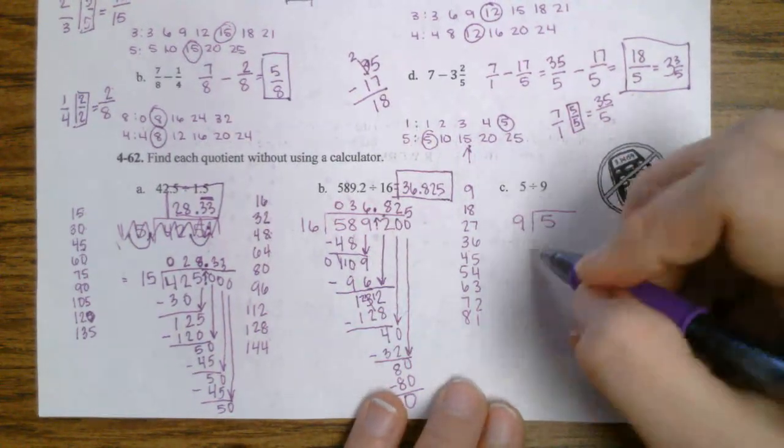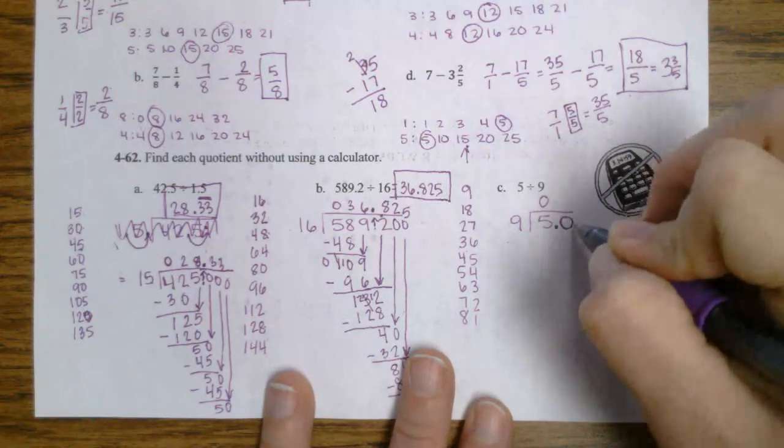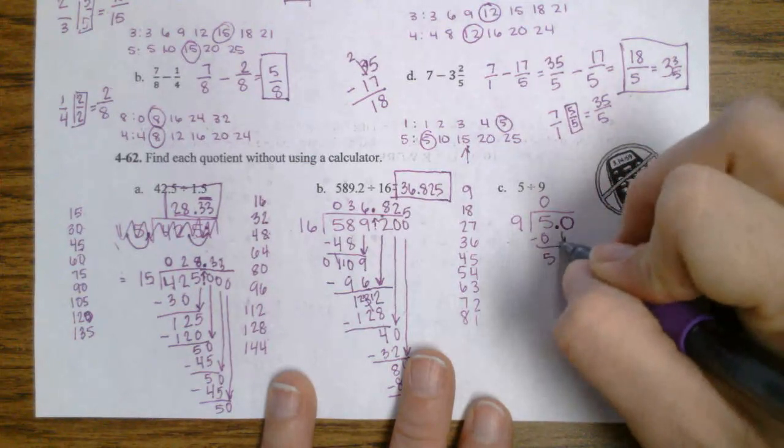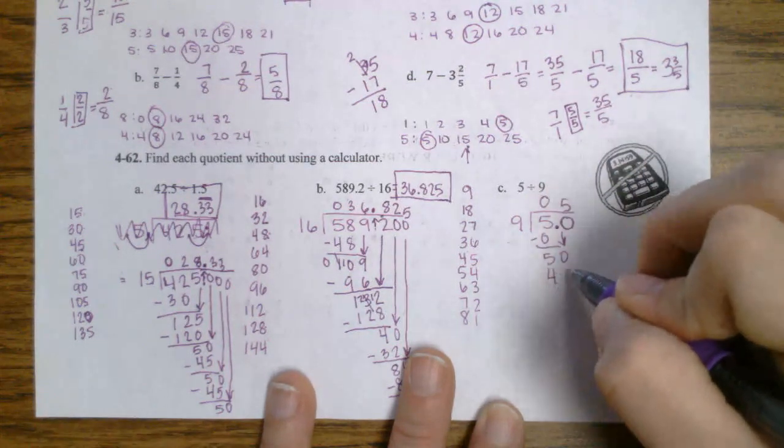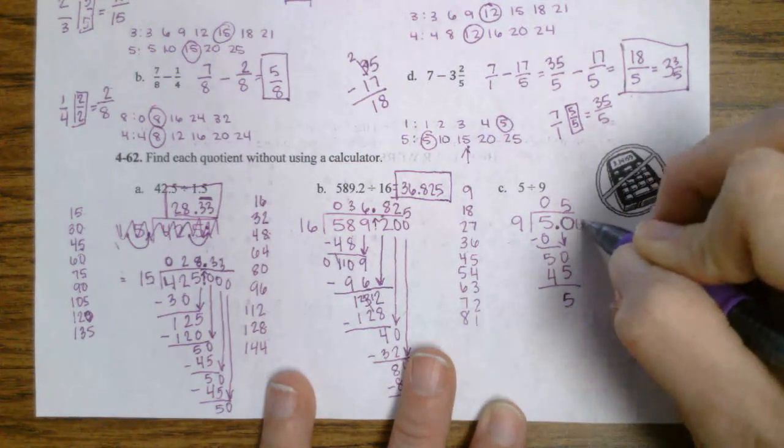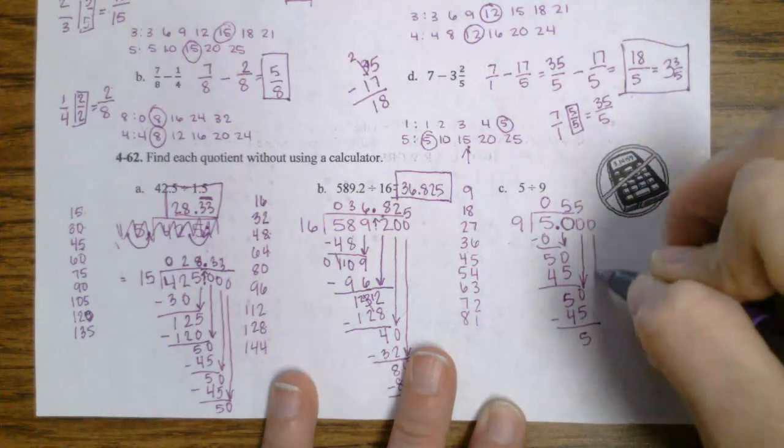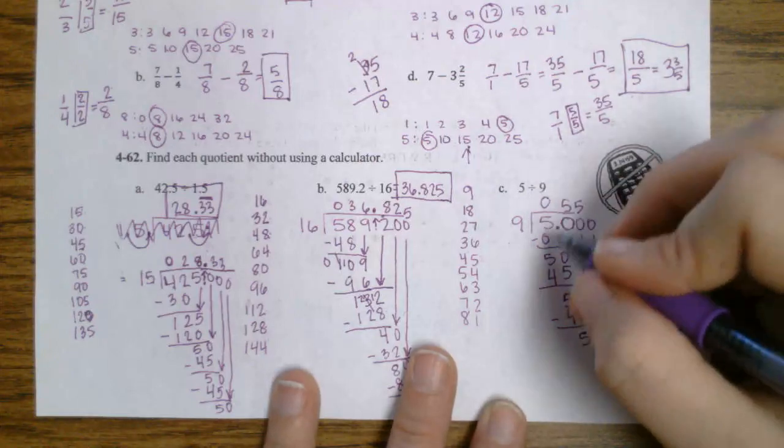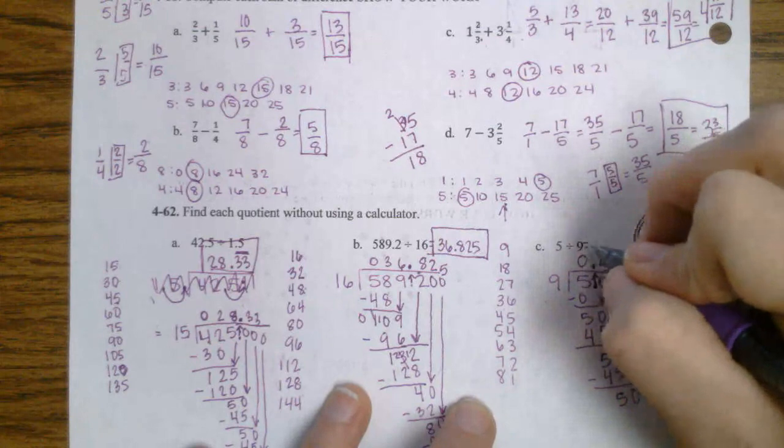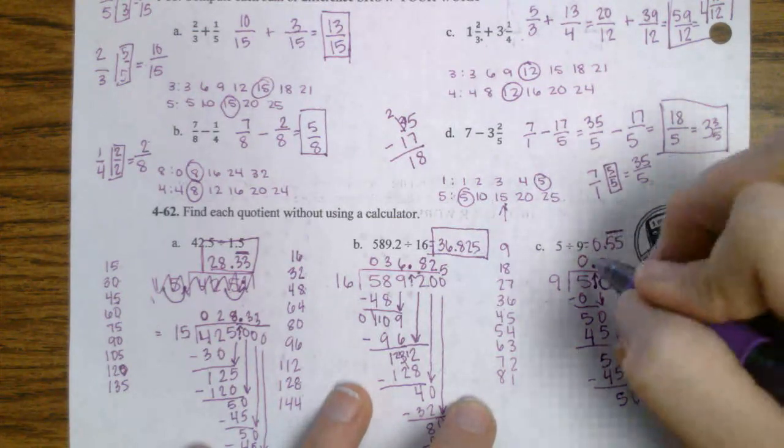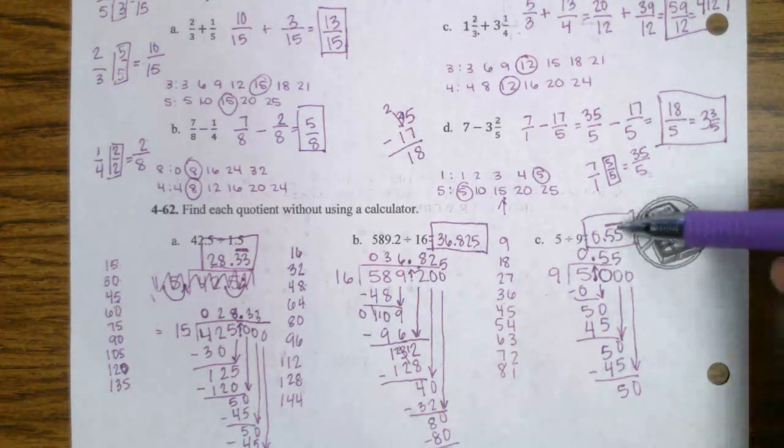Part C. I'm going to use my cheat sheet here. 9 goes into 5 zero times. Well, my number ends, but I can add a decimal point and a zero. I'm not changing my number. 5 minus 0 is 5. Bring down my zero. 9 goes into 50, 5 times. 9 times 5 is 45. 50 minus 45 is 5. Bring down a zero. It's 50 again, which we know is 5. 50 minus 45 is 5. I add a zero. It's 50 again. Wait a minute. I have another pattern. So my step. I have to move my decimal point straight up. My answer is 0 and 55 hundredths repeated because it's going to keep going and going and going. So that's my way of ending it and showing that it's repeating is that repeating bar.